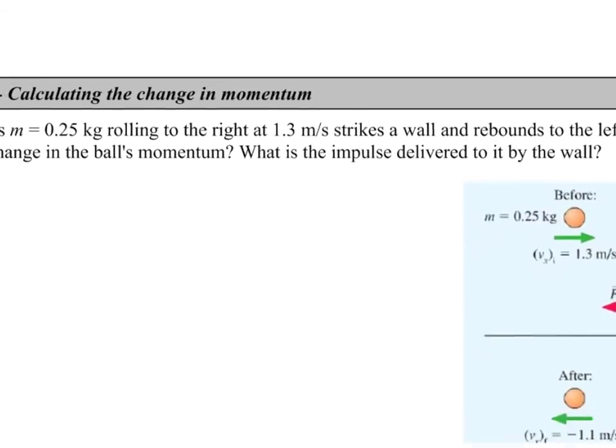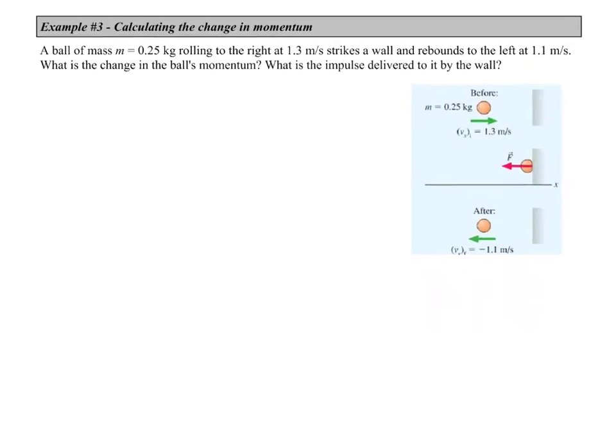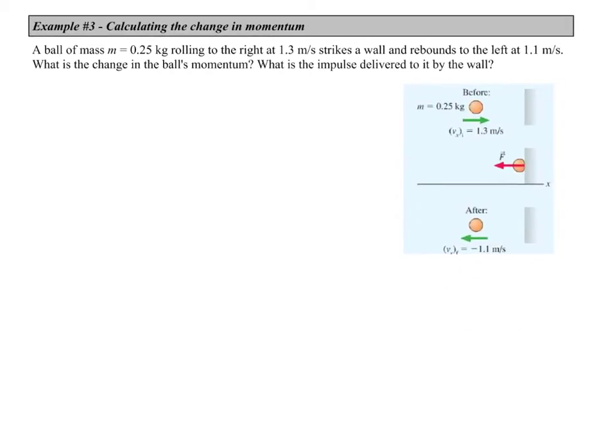So, then let's go ahead and take a look at an example. Here we got a ball of a mass of 0.25 kilograms and it's rolling to the right. It strikes a wall and rebounds to the left at 1.1 meters per second. Its initial velocity is 1.3. We want to know the change in the ball's momentum and the impulse delivered to it by the wall.